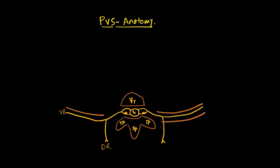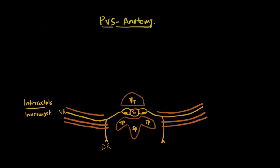The ventral ramus continues laterally into the intercostal space, coming into relationship with the intercostal muscles. At each level, there are three intercostal muscles: the internal intercostal, the external intercostal, and the innermost intercostal muscle which lies deepest. The intercostal nerve lies between the innermost and the internal intercostal muscle, whereas the external intercostal muscle lies outside these structures.